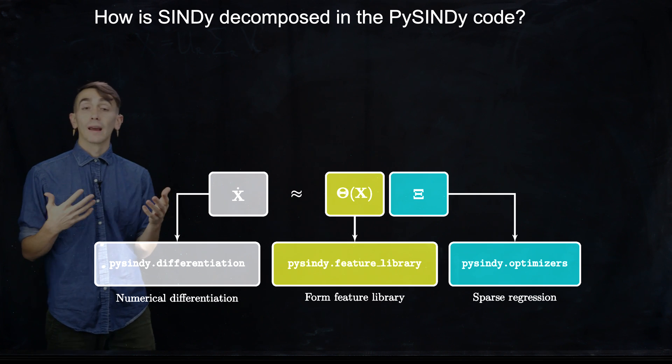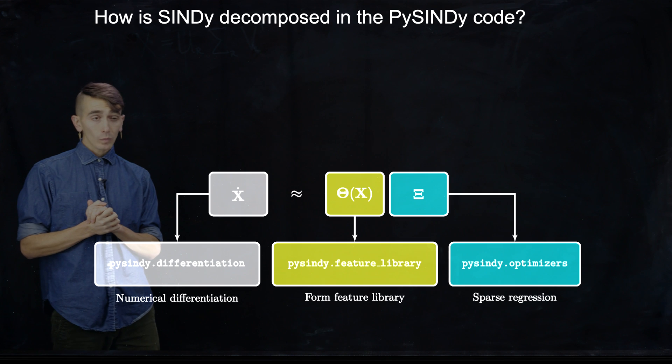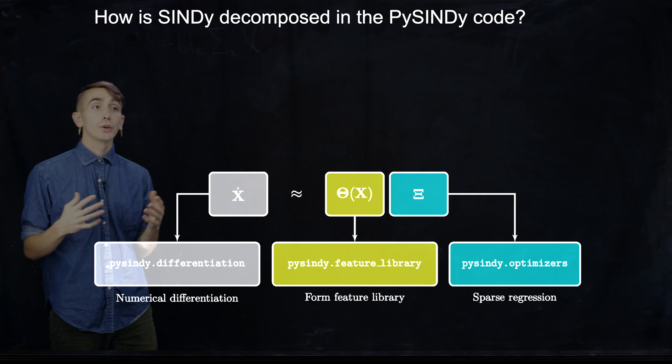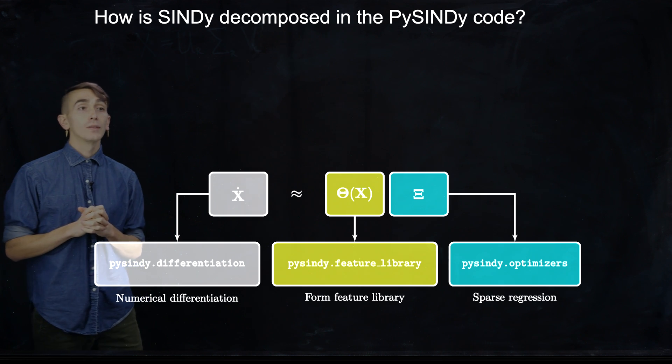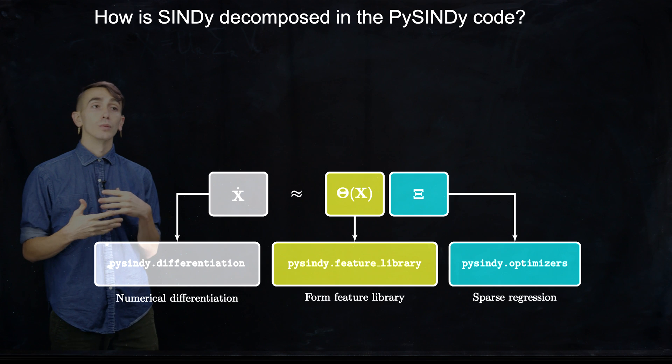So we have a number of differentiators to build this left-hand side term. Then we need a way to generate useful candidate libraries of terms of nonlinear functions. So we have a feature library to generate candidate library terms.